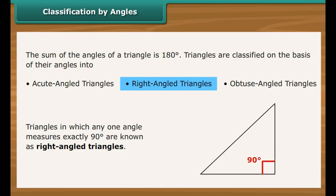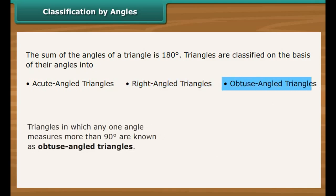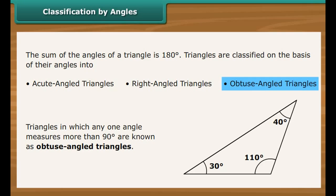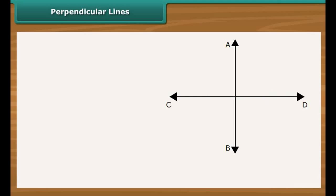Perpendicular lines: Look at two lines AB and CD that intersect. The point of intersection is O. The four angles formed at the point of intersection are 90 degrees each — therefore the two lines are perpendicular to each other. If O is also the midpoint of CD, then AB bisects CD into two equal halves. Such a line which intersects another line at right angles and divides it into two equal halves is known as the perpendicular bisector of that line.